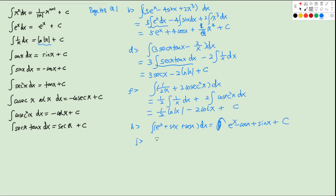And then question J: the integral of eˣ + 1/x − cosec²x dx. For eˣ the integral is just eˣ. For 1/x we get ln|x|. And since the integral of negative cosec²x is cotx, we write plus cotx, giving eˣ + lnx + cotx + C.